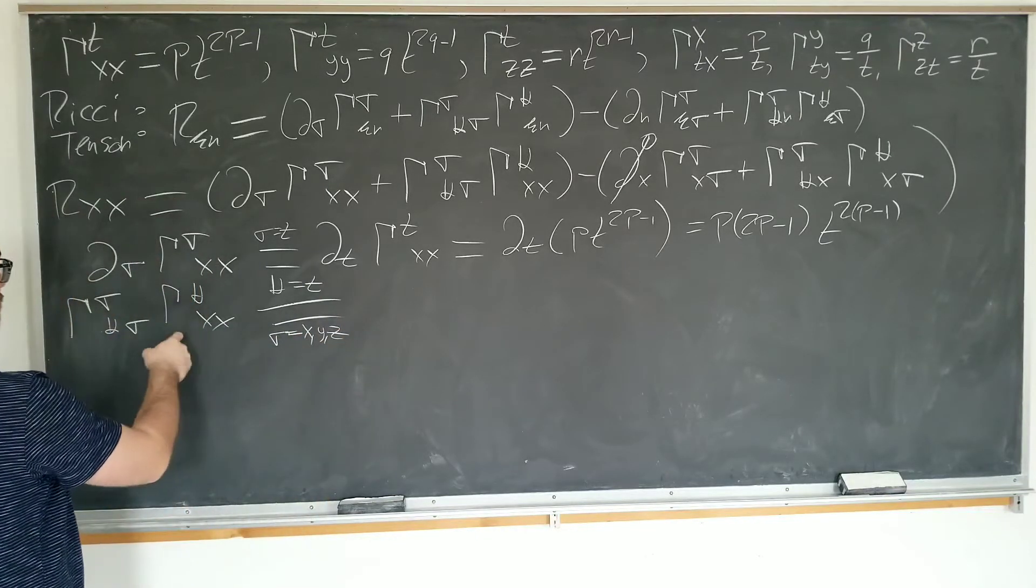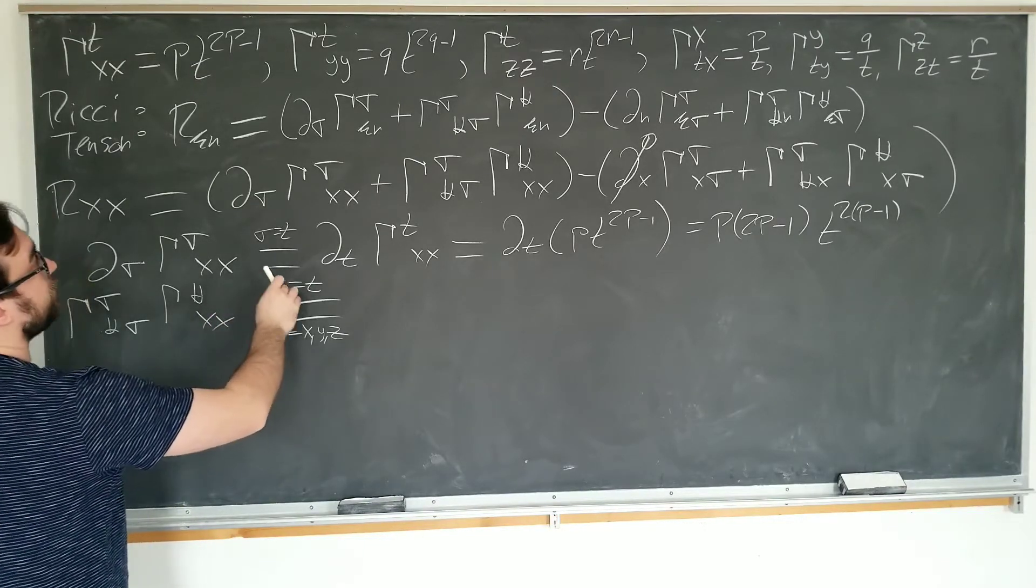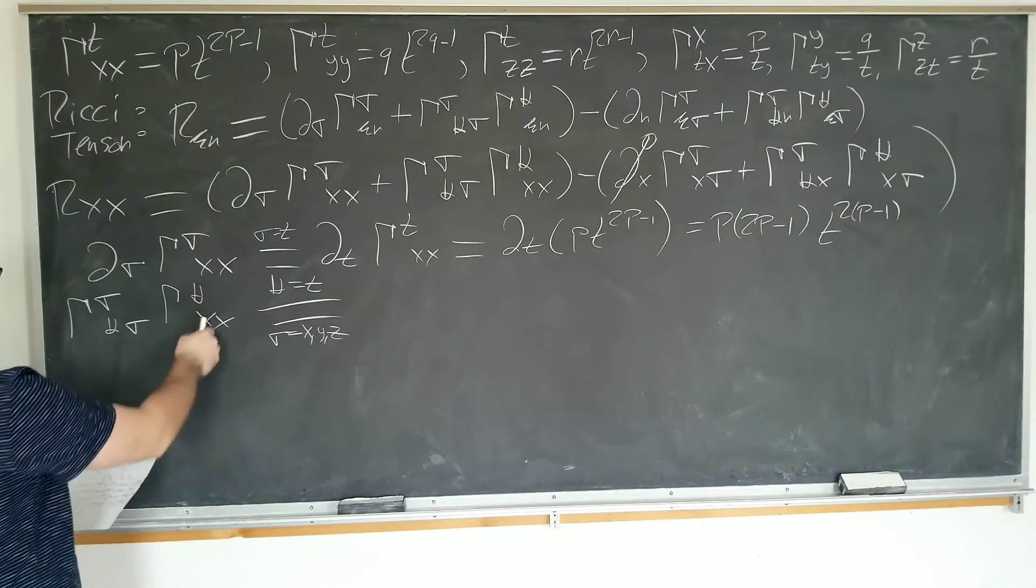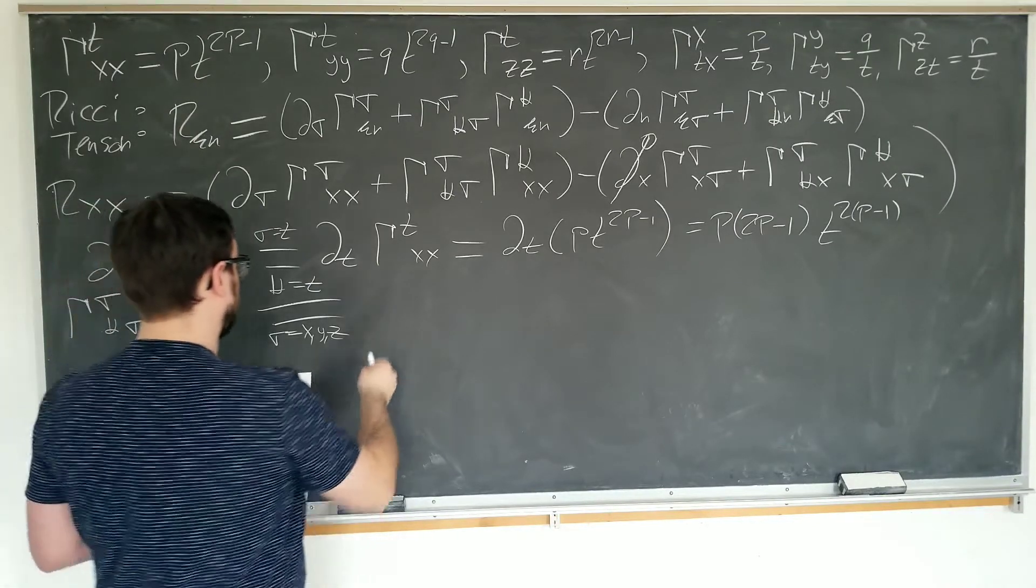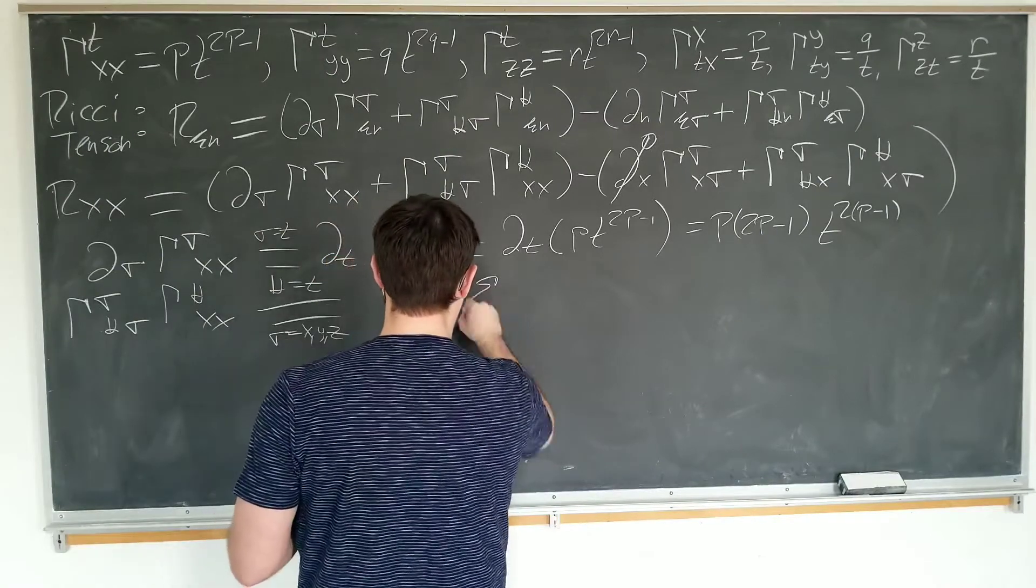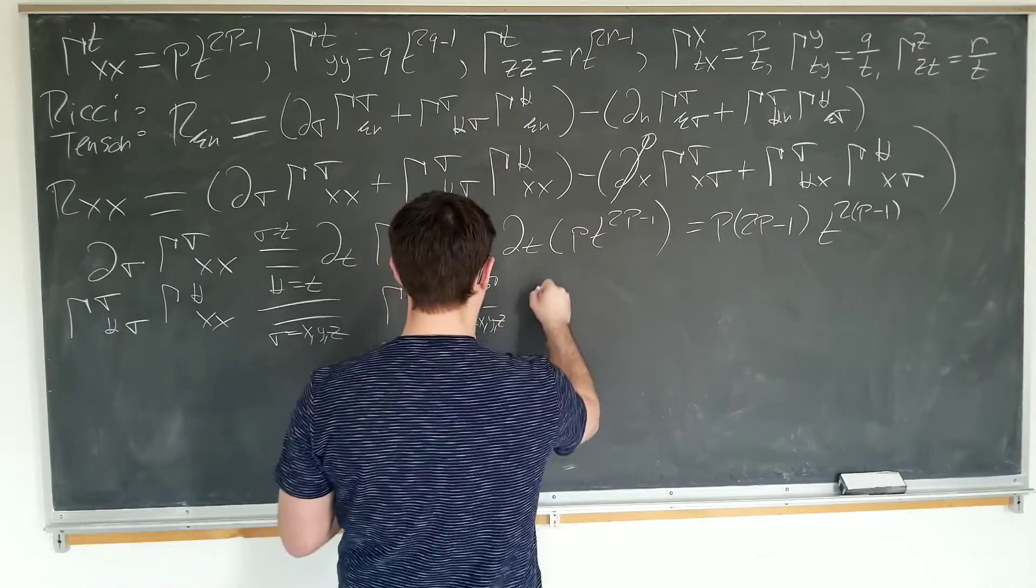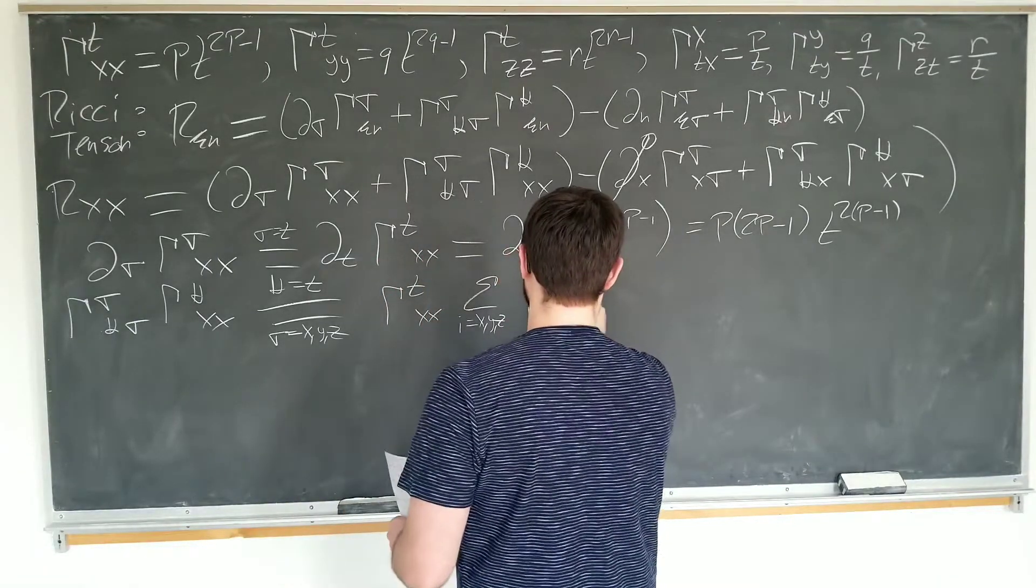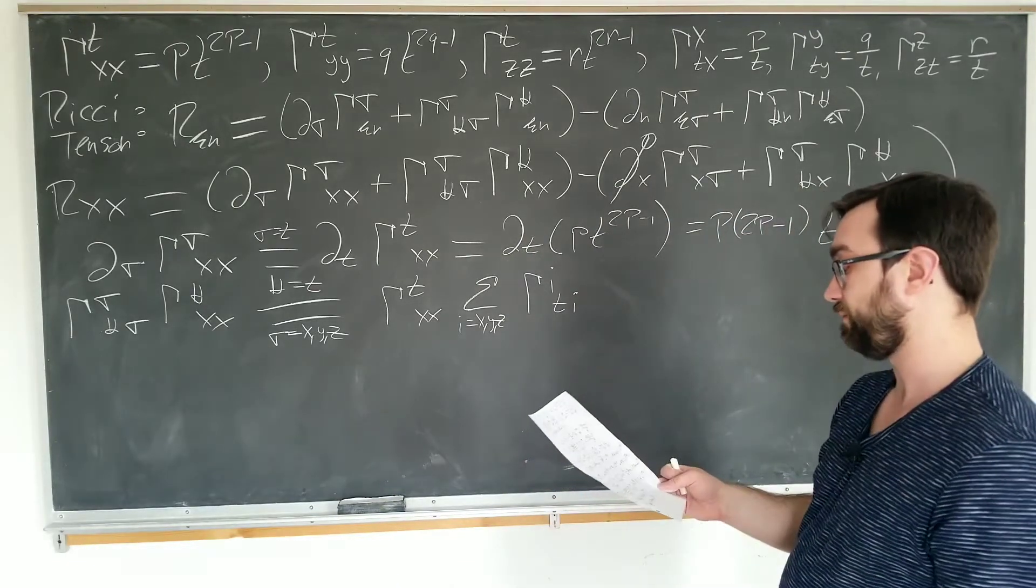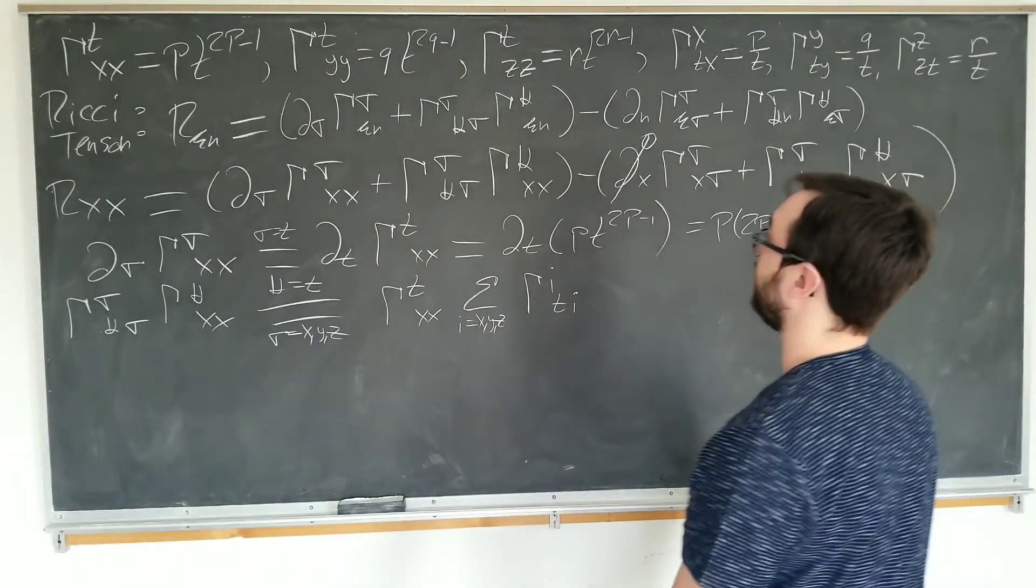Why is this? Well, I'm looking at this one here. There's only one component, again, which has two x's, which is this one. So we can actually factor this one out. So it becomes gamma t xx times the summation as i ranges from x, y, and z of gamma i t i, which we can do pretty easily. Looks kind of scary, even in my notes, but you can certainly do it.